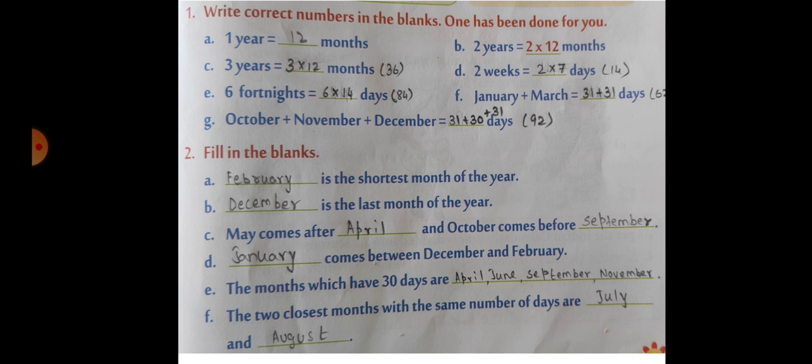Fill in the blanks. February is the shortest month of the year. December is the last month of the year. May comes after April, and October comes before September. January comes between December and February.